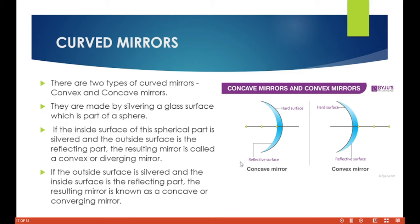If the inside surface of this spherical part is silvered and the outside is the reflecting part, the resulting mirror is a convex or diverging mirror. If the outside surface is silvered and the inside surface is the reflecting part, the resulting mirror is known as a concave or converging mirror. So for the concave mirror the inner part is the reflecting surface, while for the convex the outer part is the reflecting surface.